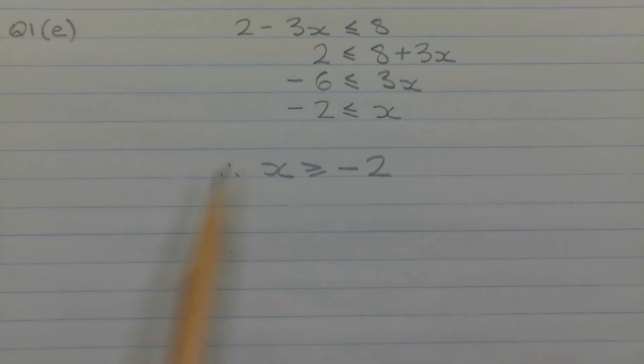Then I'm going to divide both sides of the inequality by positive 3. And since we're dividing by a positive number, the flipping of the inequality sign is not required. So we get negative 2 less than or equal to x.